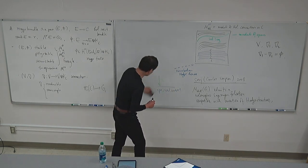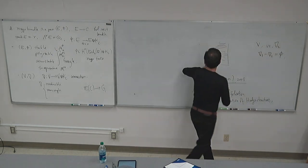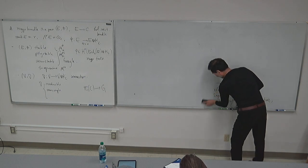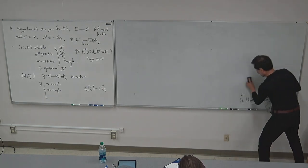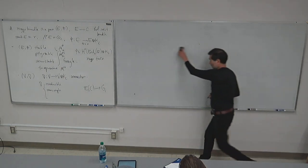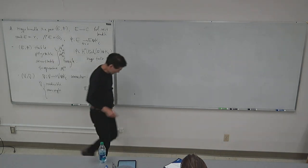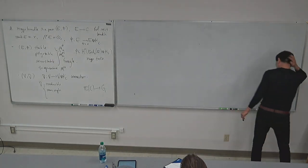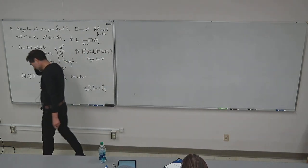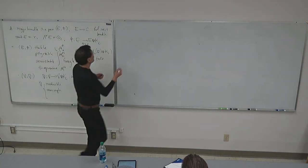It was originally the conjecture that if you applied this to the spectral curve, you do get an oper. This conjecture was solved in a completely general situation of the group — for any simple adjoint complex simple group — by Olivia Dimitrescu, Laura Fredrickson, Georgios Kydonakis, Rafe Mazzeo, Andy Neitzke, and myself.